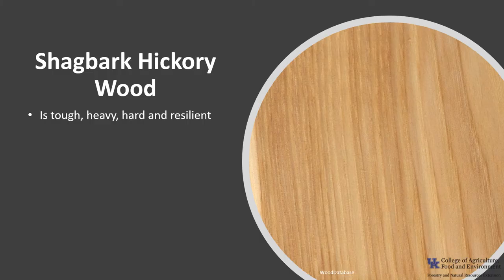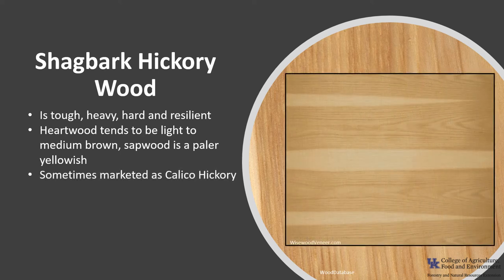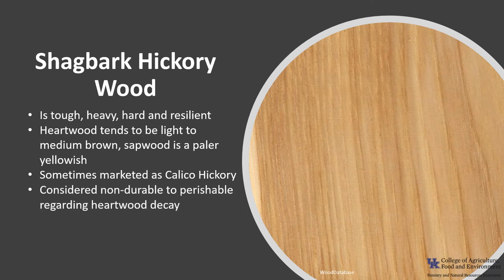The wood of Shagbark Hickory is tough, heavy, hard, and resilient. The heartwood tends to be light to medium brown with a reddish hue, and the sapwood is a paler yellow. Boards with contrasting heartwood and sapwood create a somewhat rustic appearance that is sometimes marketed as calico hickory. The wood is considered non-durable to perishable regarding heartwood decay. It is somewhat difficult to work, but the wood responds well to steam bending and is among the hardest and strongest woods native to the United States.